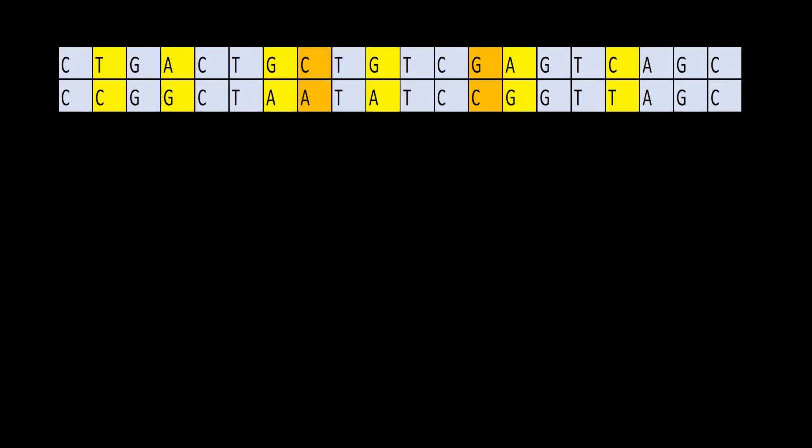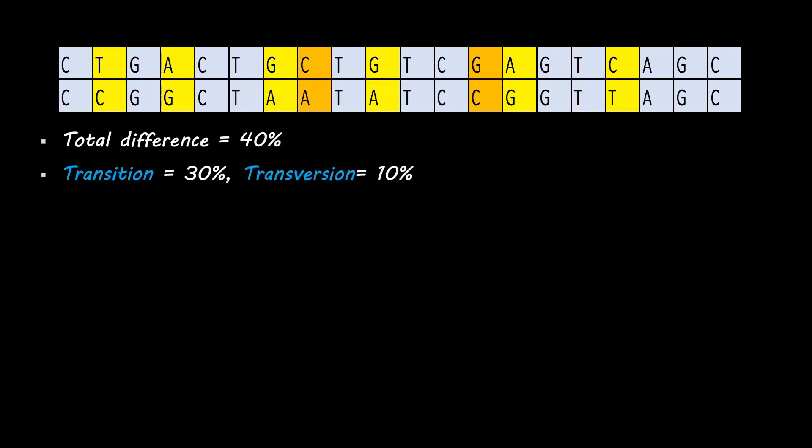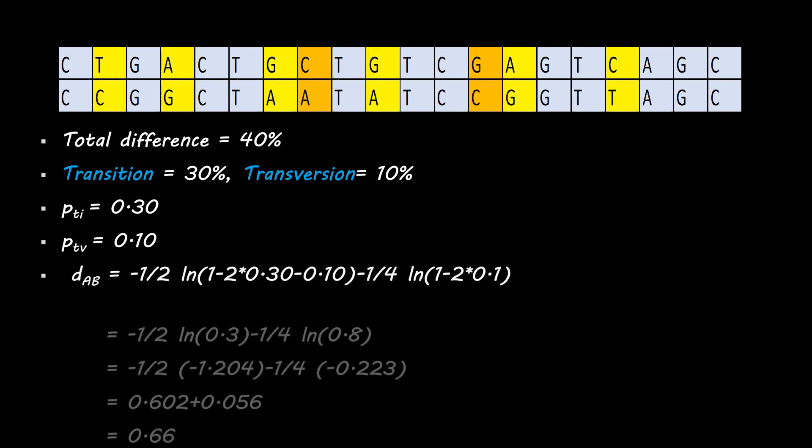Let's come to the example again. We had two sequences where eight pairs were different, so total difference was 40 percent. But here transition and transversion are calculated separately. Transitions are when purines are substituted by purines, and transversions are when purines are substituted by pyrimidines. Here 30 percent is transition and 10 percent is transversion.